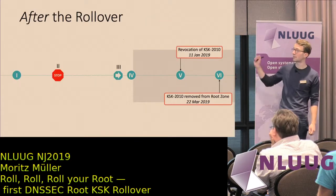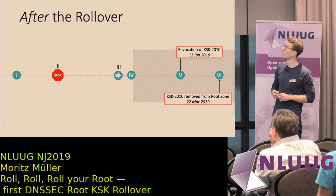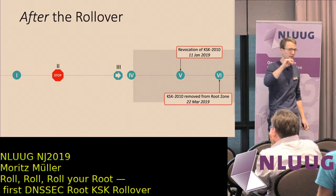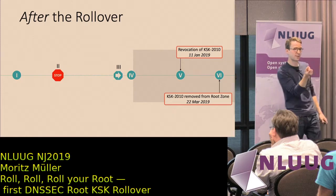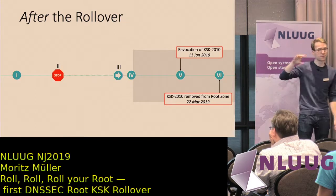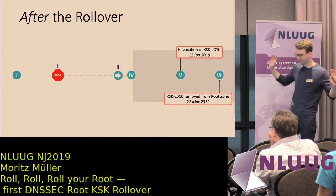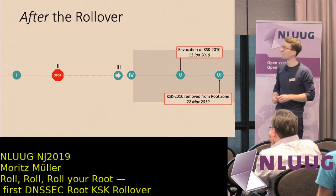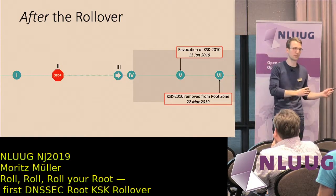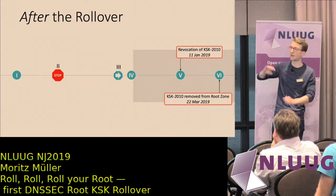Let's move to the last stage of the rollover, which was considered more or less housekeeping. The first step was the revocation of KSK 2010: a revocation flag was set on the key, which was then published in the root zone. Resolvers doing automatic trust anchor updates would see this flag and stop trusting that key. Then KSK 2010 was finally removed from the root zone, and it has also been removed from the hardware security module — completely destroyed.